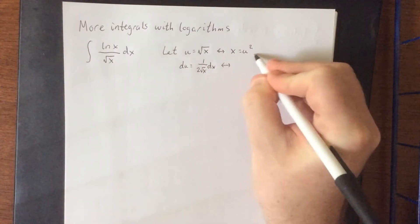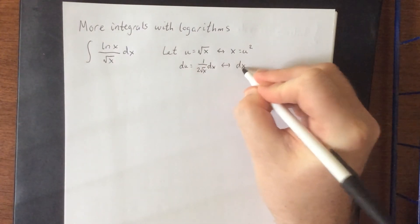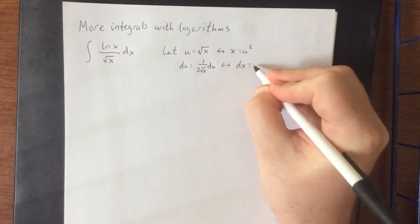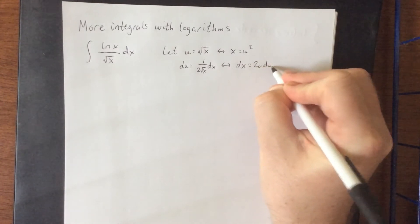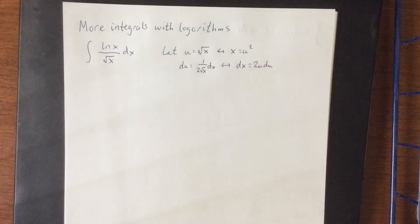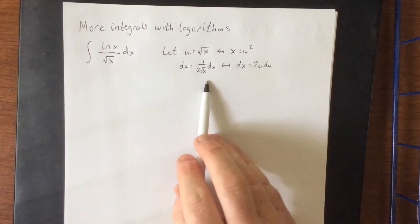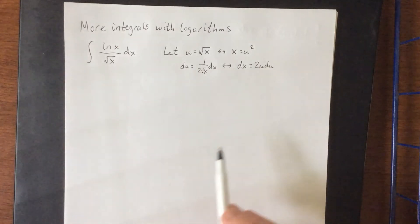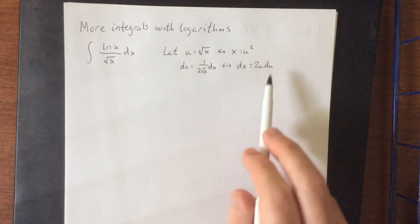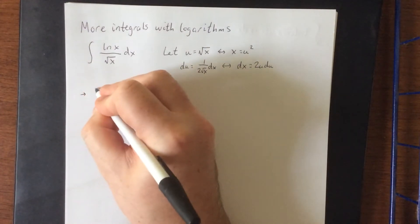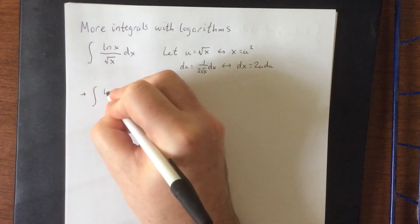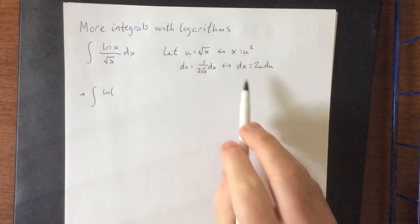The alternative would be to come up with the differential this way. So dx would be equal to 2u times du. You can use either of these substitutions in this case because we do have a very conveniently placed square root of x in this denominator. I'm actually going to demonstrate this with the substitutions on the right.